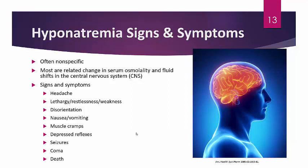CNS-type symptoms include headache, lethargy, restlessness, weakness, and disorientation. Nausea and vomiting may occur because different receptor zones in the CNS, like the chemoreceptor zone, regulate these responses. Muscle cramps and depressed reflexes may also occur. In severe cases, you may see seizures, coma, or even death.